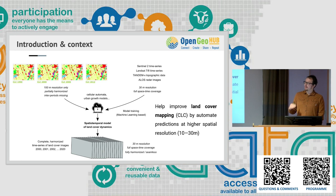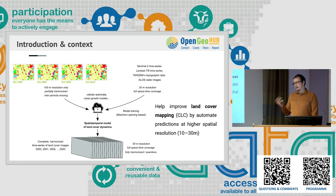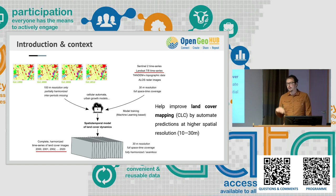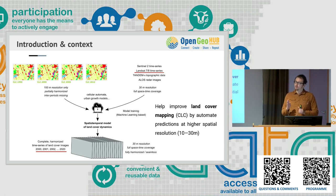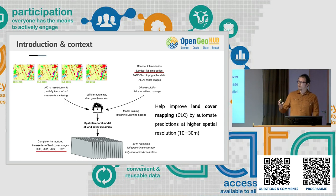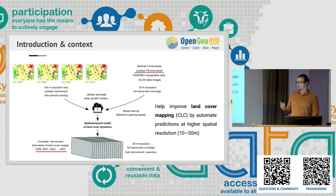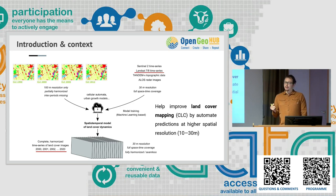Inside GeoHarmonizer, one of the main objectives was to improve land cover mapping and automated predictions at higher spatial resolution. The vision was to develop one single machine learning model to predict all land cover types for Europe, in a spatial-temporal framework combining data from different periods and years. Considering the goal to go back to 2000, the only data available as open data was Landsat.